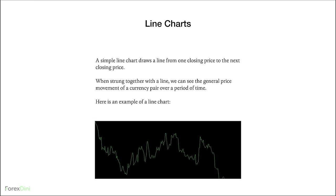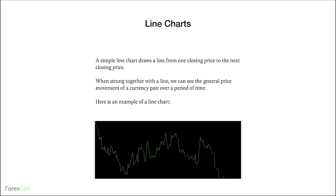Let's start by explaining what a line chart is. A simple line chart draws a line from one closing price to the next closing price. When strung together, we can see the general price movement of a currency pair over a period of time. Here's an example of a line chart — it's just an up and down movement made up of lines.